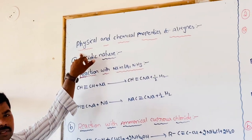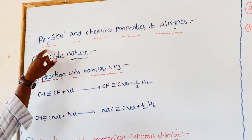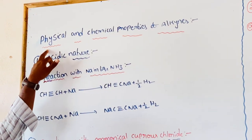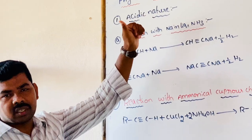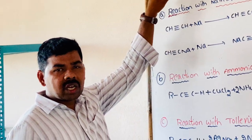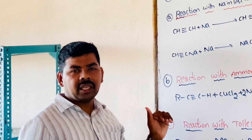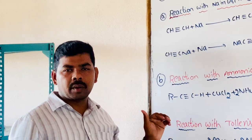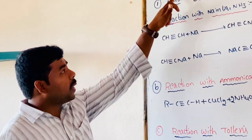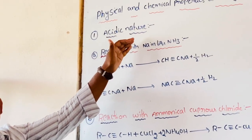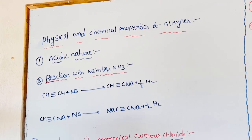First, physical properties of alkynes. The first three members are gases. The next eight members are liquids, and higher ones are solids. Alkynes are insoluble in water but completely soluble in organic solvents like ether, carbon tetrachloride, benzene, etc. Melting points and boiling points increase due to increased molecular weight as the carbon chain increases.